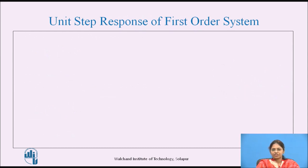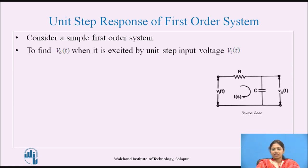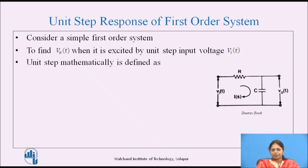Unit Step Response of First Order System. Consider a simple first order system. The main task is to find the output response when it is excited by the unit step input voltage V_I(t). Mathematically, the unit step is defined as V_I(t) = 1 for t ≥ 0, and V_I(t) = 0 for t < 0.